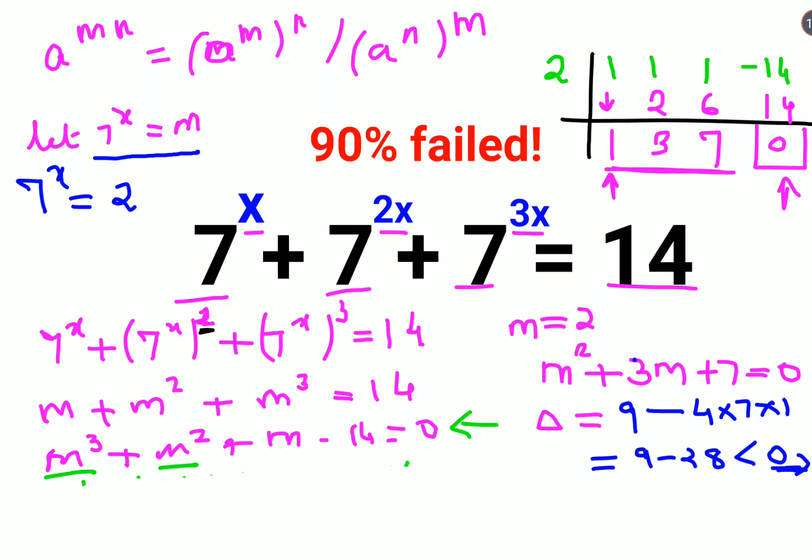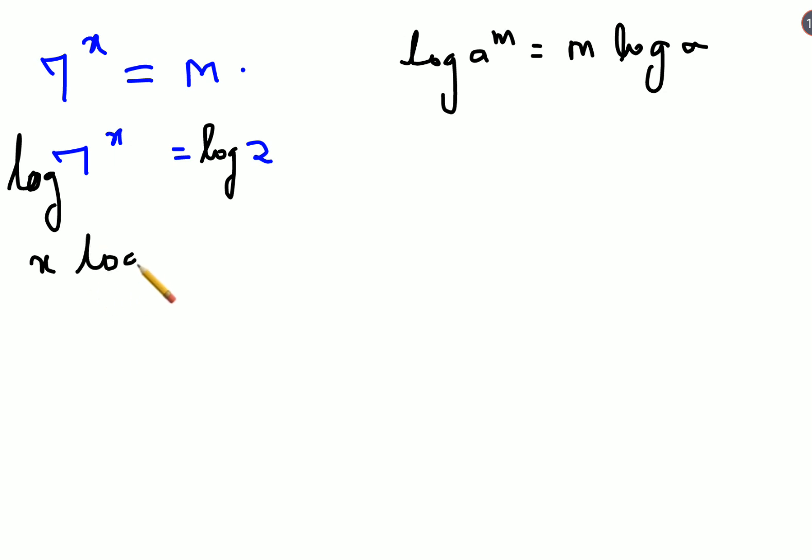So in that case we will say that 7x equals to 2 is the only option available as m for this question. Now in order to find the value of x we got 7x equals to m and that is equals to 7x equals to 2. Now in order to find the value of x we will apply log on both sides. So here we can see log of a raised to m equals to m log a. So this can be written as what x log 7 equals to log 2.